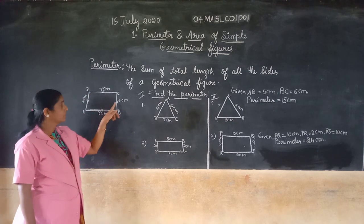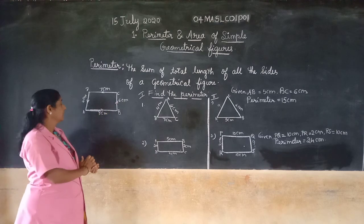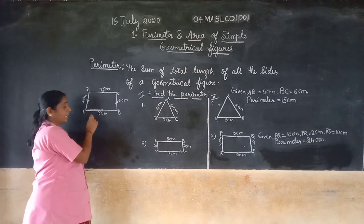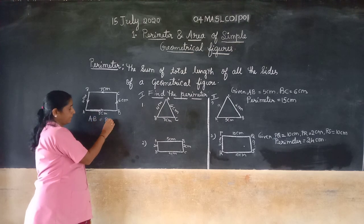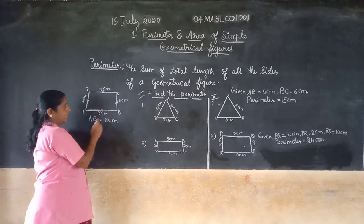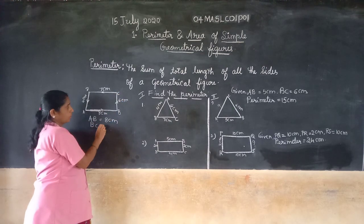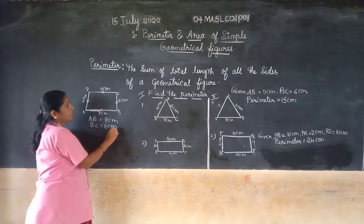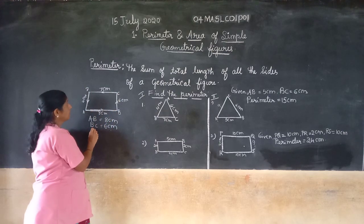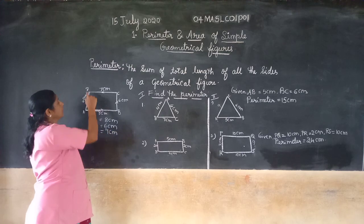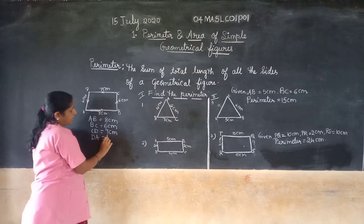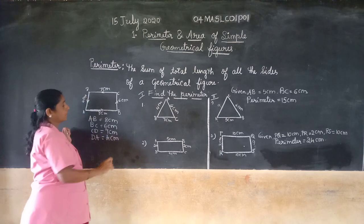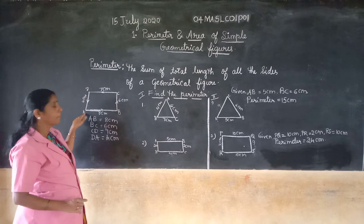For this they give us measurements. What is the distance from A to B? AB is 8 cm. Distance from B to C, BC is equal to 6 cm. Distance from C to D, CD is equal to 7 cm. Distance from D to A, DA is 4 cm. Now what is the total length of this shape boundary?